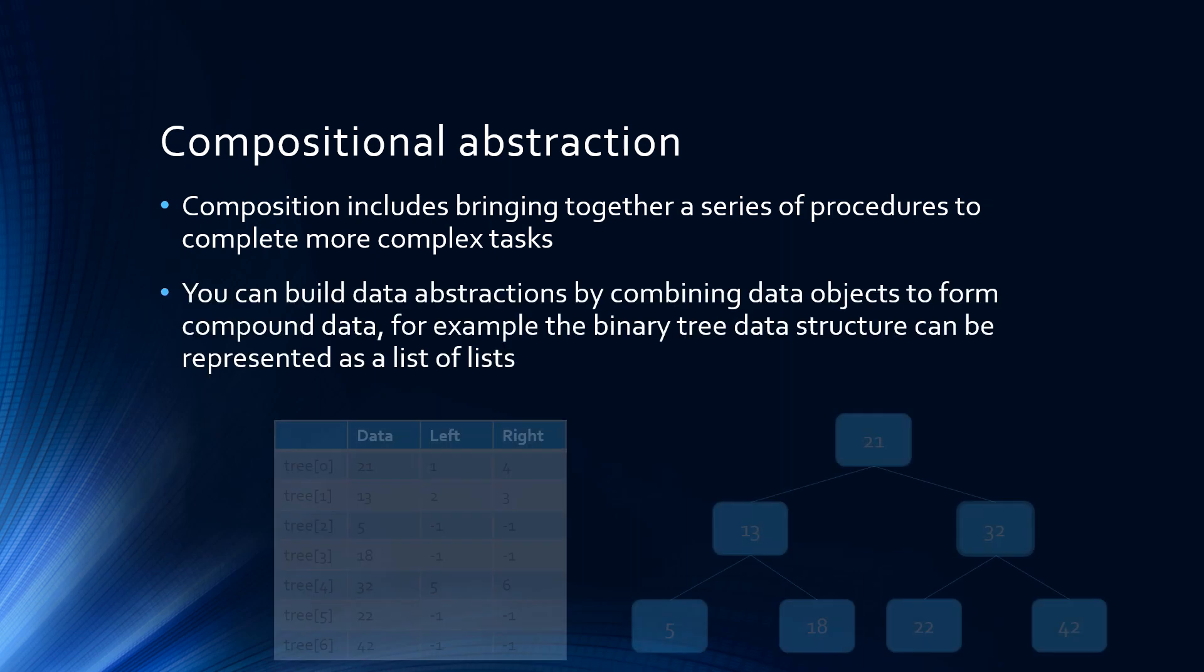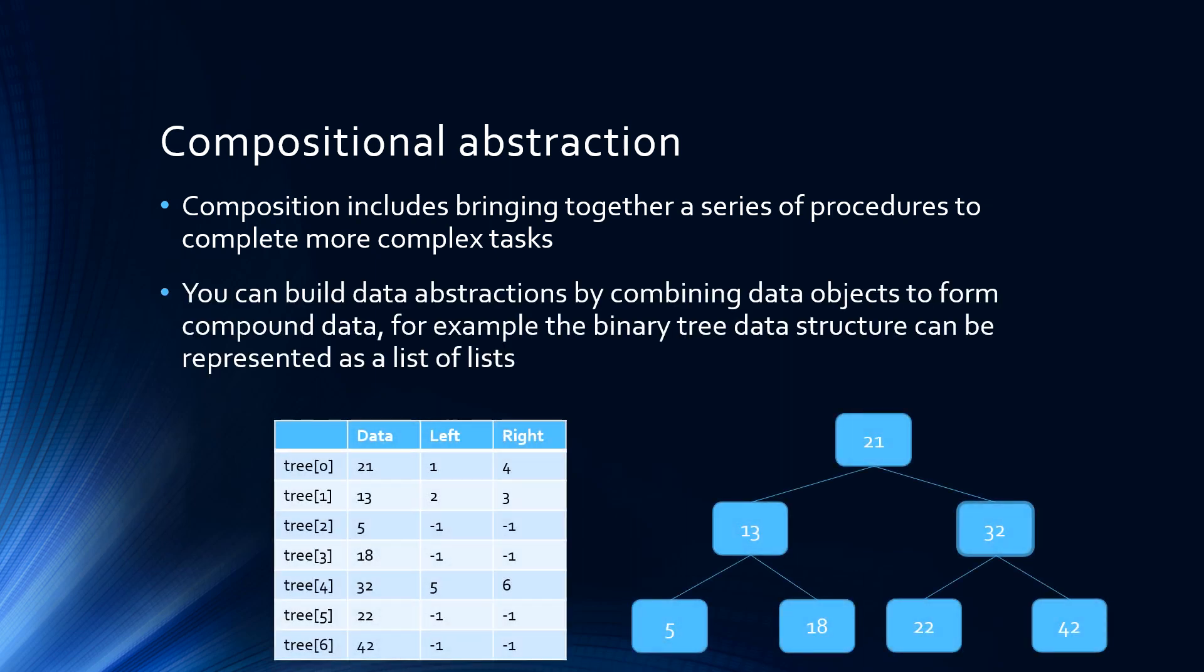You can also refer to building data abstractions by combining data objects to form compound data. For example, this binary tree data structure can be represented as a list of lists.